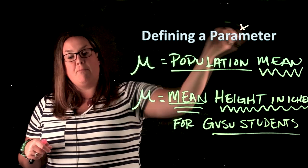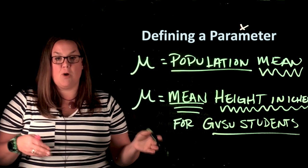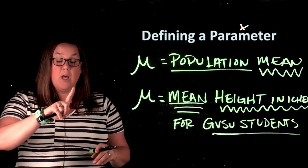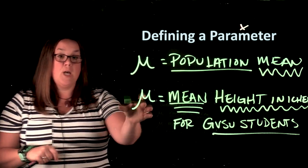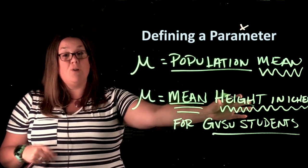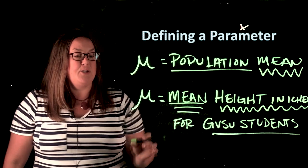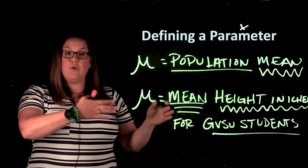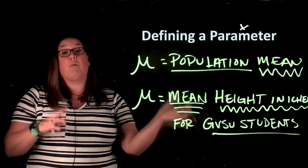So whenever you define a parameter, you're going to be defining it as a sentence — what you want to make an inference on. You always have to include the population because parameters are for populations, and then you would include the variable that you're measuring. So this was an example of how to do a definition for P: P equals proportion, then population, and then what you're measuring. For mu, you always start with mu equals mean because mu is a population mean. Then you state the variable, and it's helpful to include the units — so height in inches — and then our population was GVSU students. This is how you define a parameter, and you'll notice as we continue making inferences that we'll end up using this parameter definition.